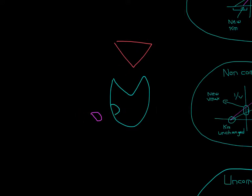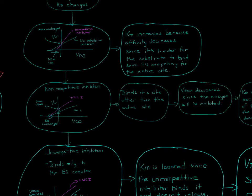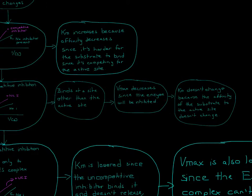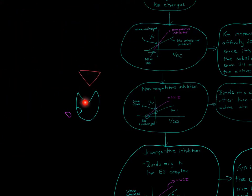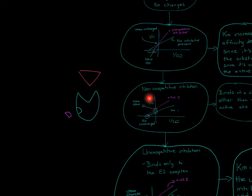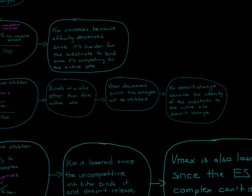Once the non-competitive inhibitor binds, it impacts the enzyme's ability to create product, so Vmax decreases. The substrate can still bind to the enzyme, but after the inhibitor has bound, the product won't be created. On the Lineweaver-Burk plot the y-intercept goes up — because it's a reciprocal plot of 1/V vs 1/S — meaning Vmax actually decreases. The KM doesn't change because the affinity of the substrate to the active site is unaffected.